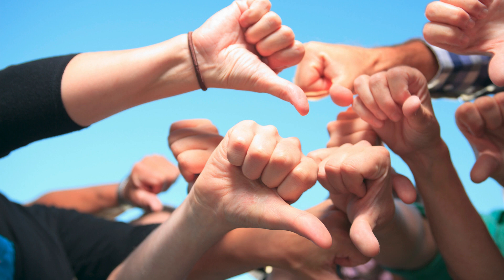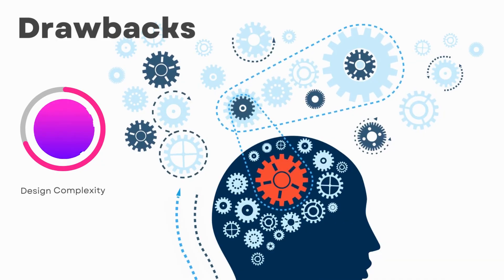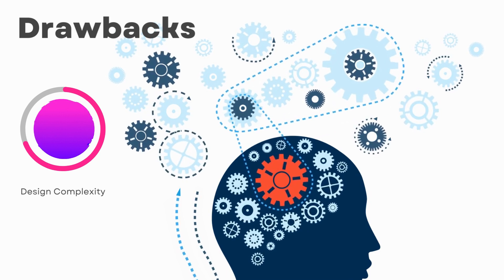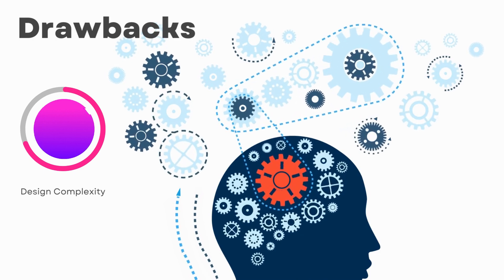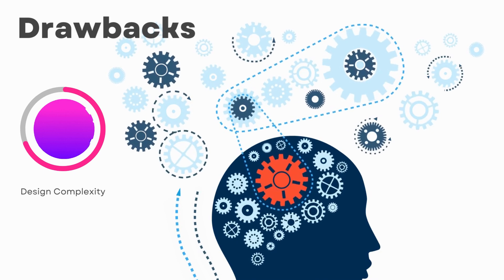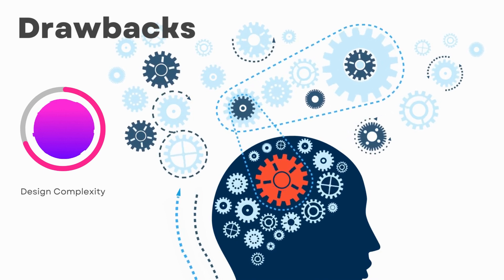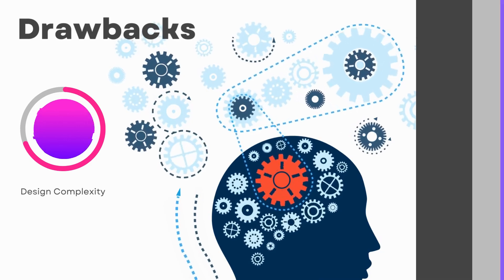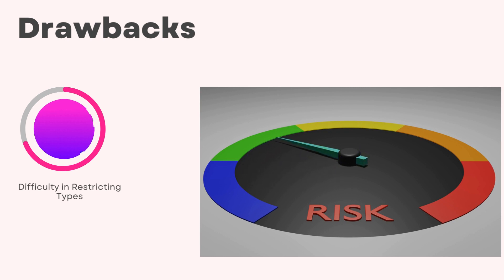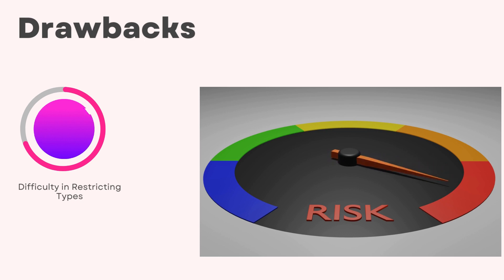However, not all that glitters is gold. First, design complexity: the composite pattern can make your design more complex by introducing many additional classes, just as a tree can become complicated with many branches and leaves. Second, difficulty in restricting types: in the composite pattern, it can be difficult to restrict the types of components a composite can have, just as it's hard to limit what type of leaf a branch can bear.